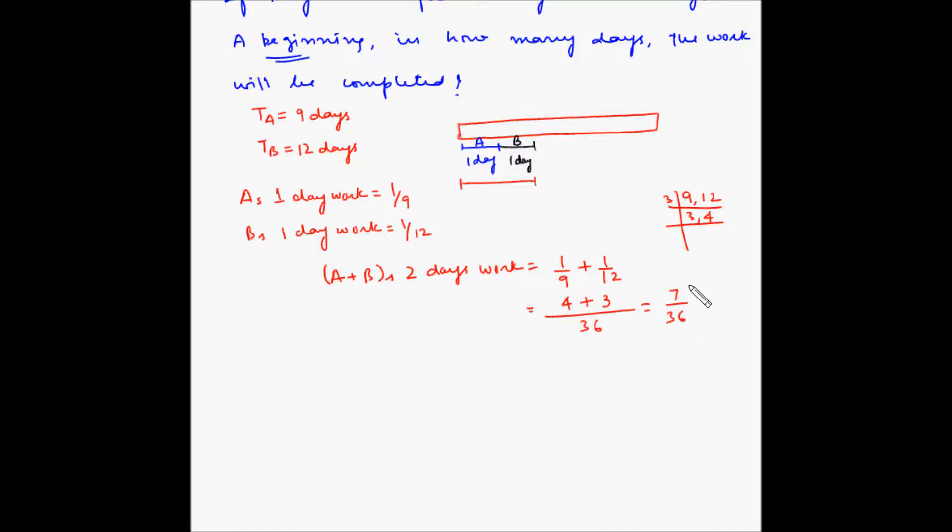This means that if you divide the whole work into 36 parts, then A plus B are completing 7 parts out of those 36 parts in two days. We want to find out in what time they will complete 36 parts out of 36 total parts, which is the total work.